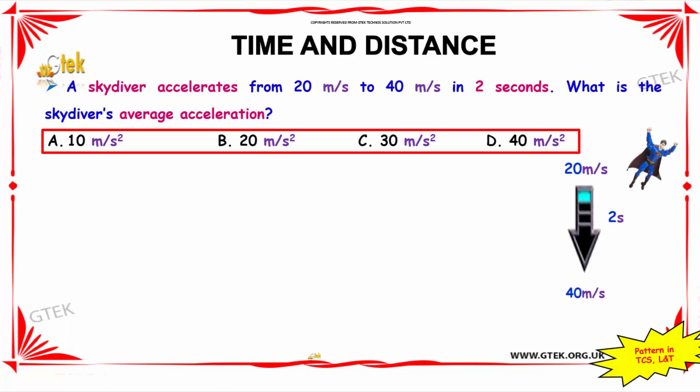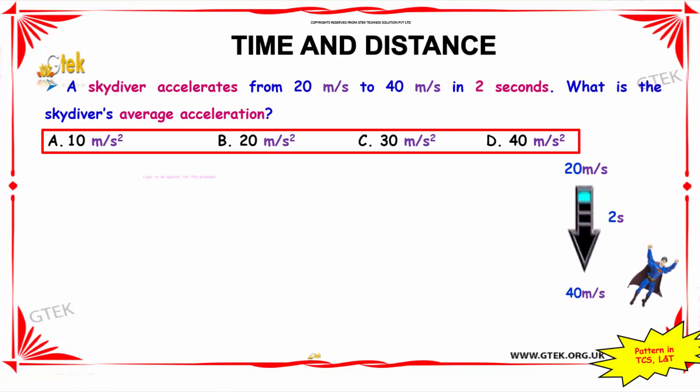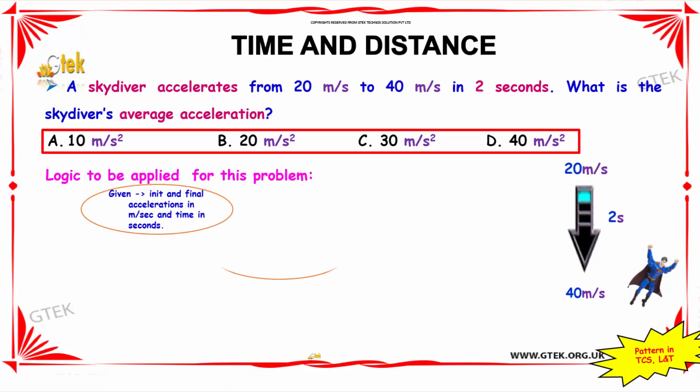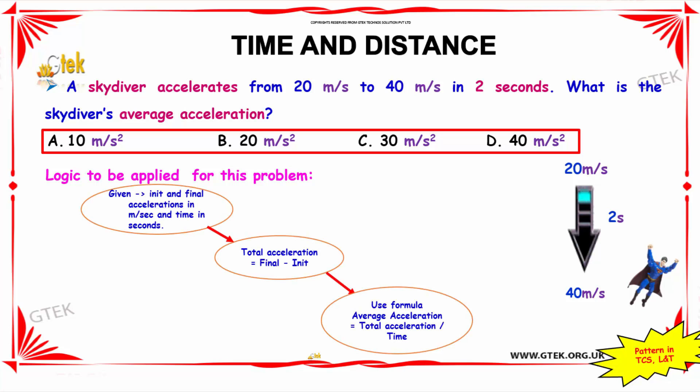The next problem is: a skydiver accelerates from 20 meters per second to 40 meters per second in 2 seconds. The question is, what is the skydiver's average acceleration?